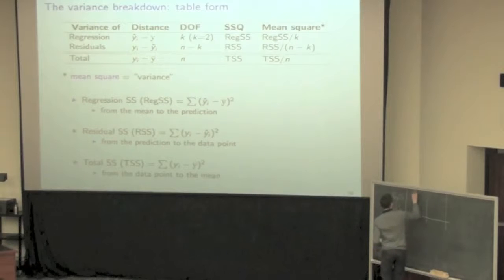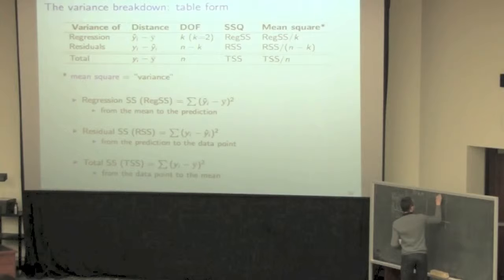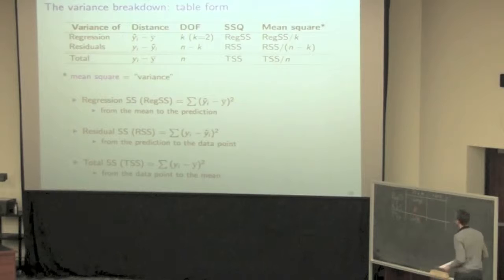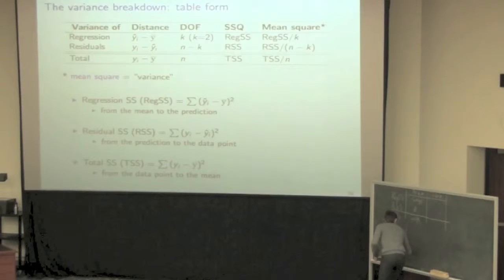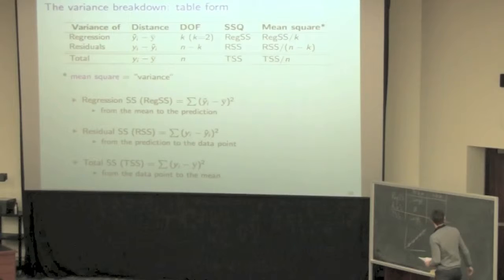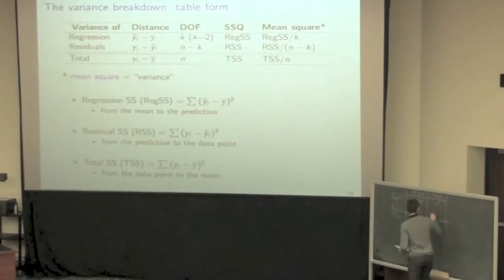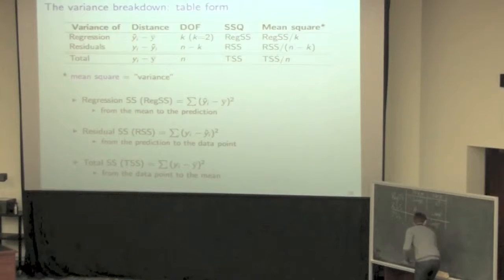This is the perfect model, and this is the worst model. For the perfect model, the regression sum of squares is some large number and the residual sum of squares is zero. For the worst case model, we have no regression sum of squares — it's zero — our residuals account for everything, which is a large number, and then the total sum of squares is also a large number.